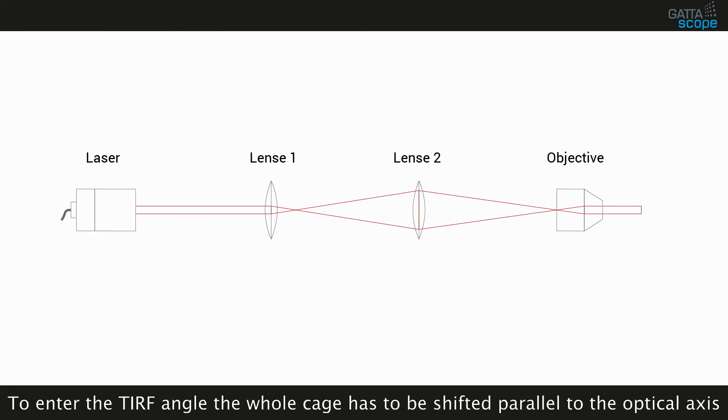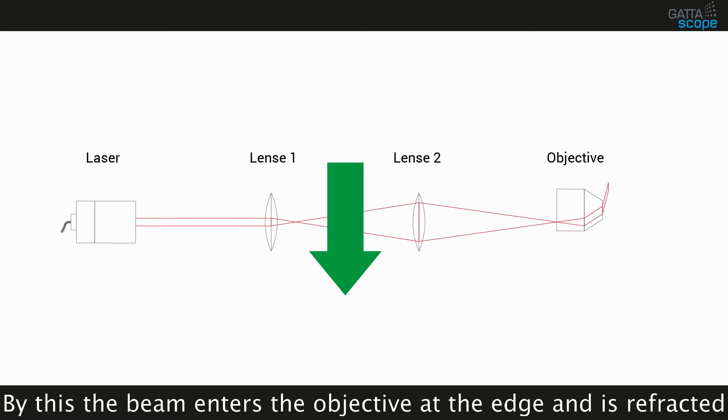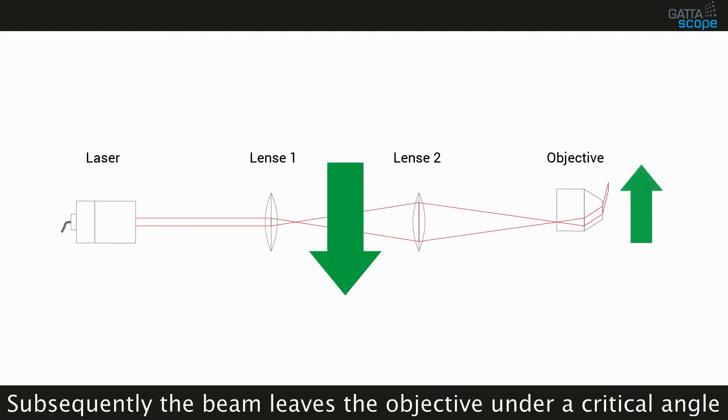To enter the TIRF angle, the whole CAGE has to be shifted parallel to the optical axis. By this, the beam enters the objective at the edge and is refracted. Subsequently the beam leaves the objective under a critical angle.